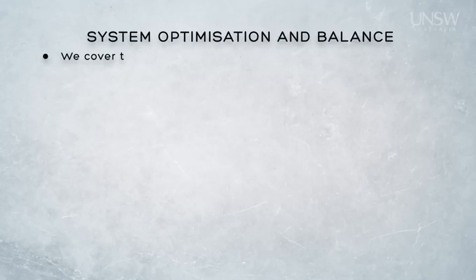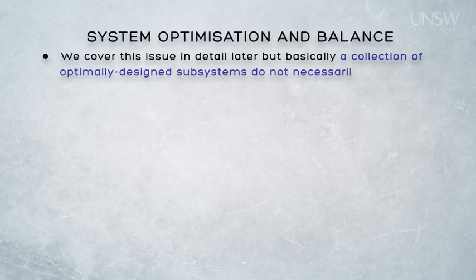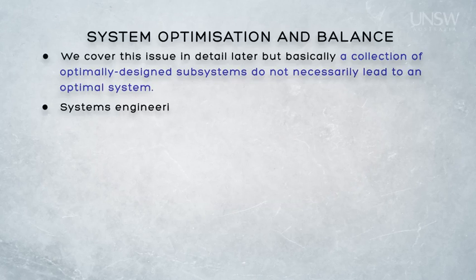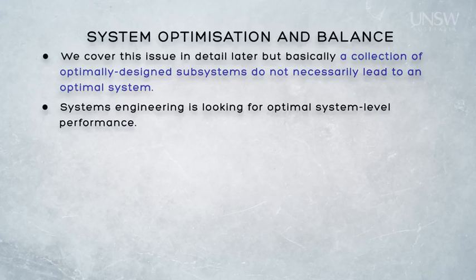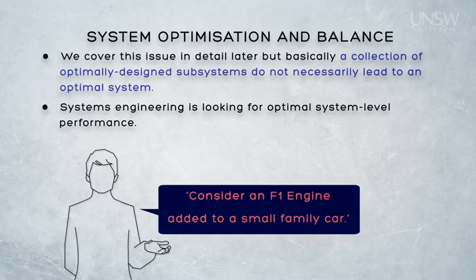A further focus of systems engineering is system optimization and balance. It doesn't necessarily follow that the combination of optimised subsystems leads to an optimised system. It's not normally useful, therefore, to allow the designers of subsystems to optimise their part of the system in isolation from system-level considerations. Consider, for example, the impact of incorporating an F1 engine in a small family car — the engine may be a great engine optimised for performance, but it will destroy the remainder of the drivetrain, which has been designed for a much less powerful engine.